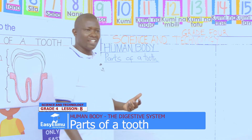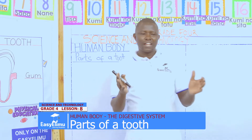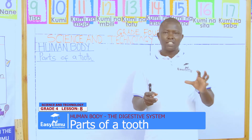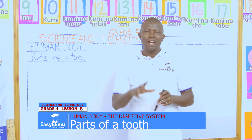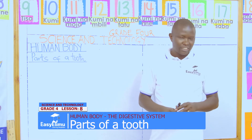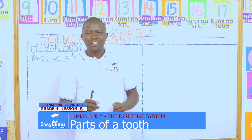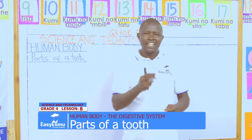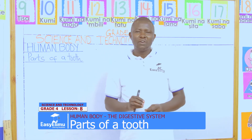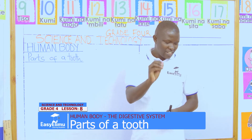I would like us to pair ourselves - everybody with a partner. Let your partner open their mouth and check what is in our mouth. What have you seen in your desk mate's mouth? Yes, you have seen the white small bones inside the mouth. Those small white bones inside the mouth that we use to bite and eat are called the teeth.